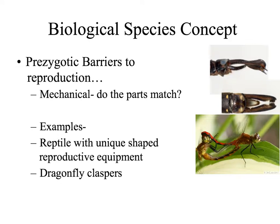Mechanical isolation has to do with the reproductive parts — do the parts match? If not, these animals will not be able to reproduce. Reptiles are notorious for having uniquely shaped reproductive equipment, and if a male's anatomy doesn't match the female's, those animals cannot reproduce. Another interesting example are dragonflies, which have claspers at the end of their tails. The male must clasp the female behind the neck to form a mating loop. If the male clasper does not match the shape of the female's head, he cannot grab hold of her and reproduction will not occur. This is another example of mechanical isolation where parts must match for reproduction to occur.